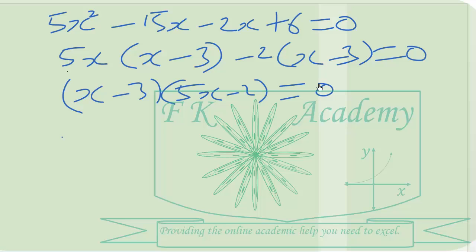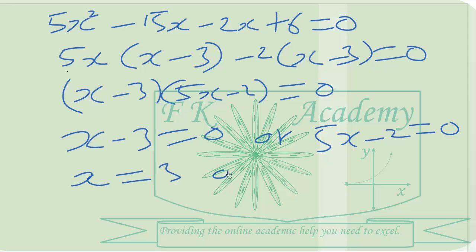So either x minus 3 equals 0 or 5x minus 2 equals 0. So we are supposed to get x equals 3 or x equals 2 over 5. But the valid solution here is x equals 3.